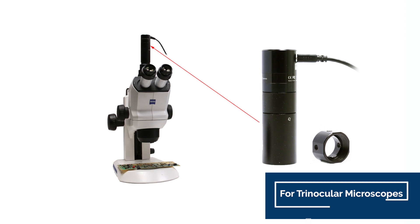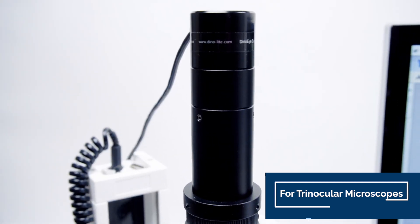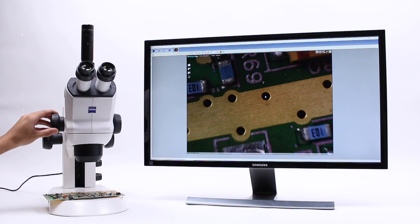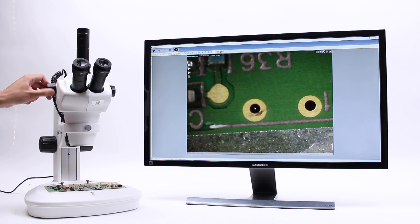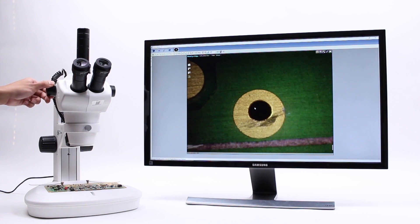The AM7025X includes our powerful DynoCapture software for taking photos, videos, performing measurements, and much more. Using the included DynoCapture software, you can digitally zoom your field of view up to two times.